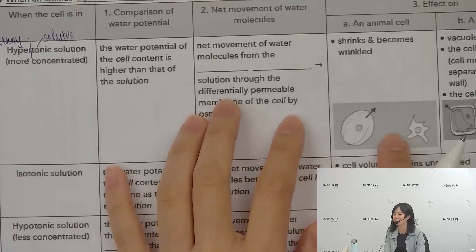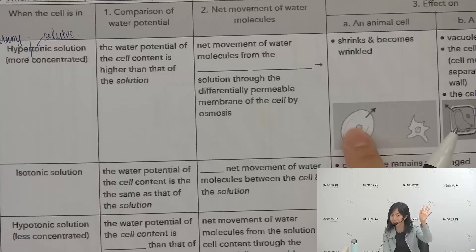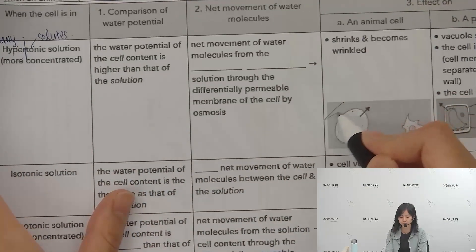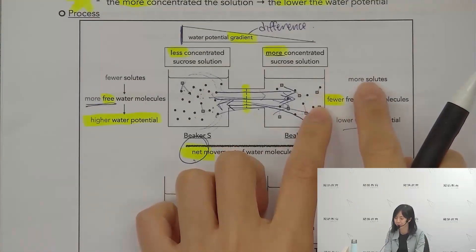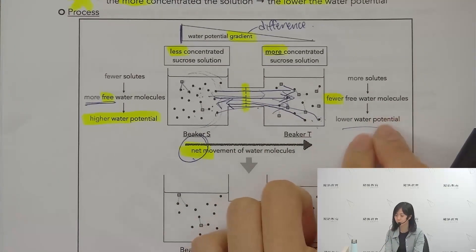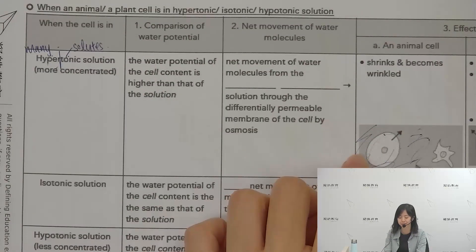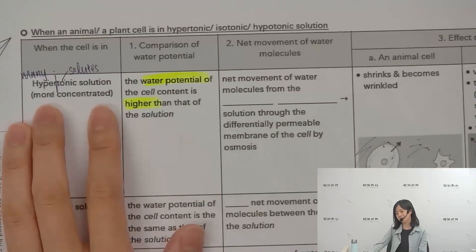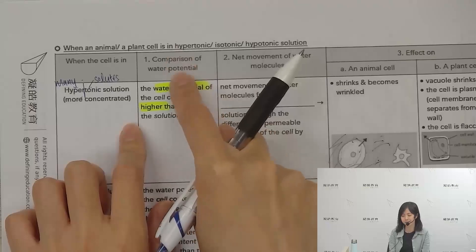Now consider: if we place an animal cell into a very concentrated (hypertonic) solution, which has higher water potential — the animal cell or the solution? The answer is the animal cell, because when the external solution is more concentrated, it has more solute molecules holding the free water molecules, so fewer free water molecules remain and the water potential is lower.